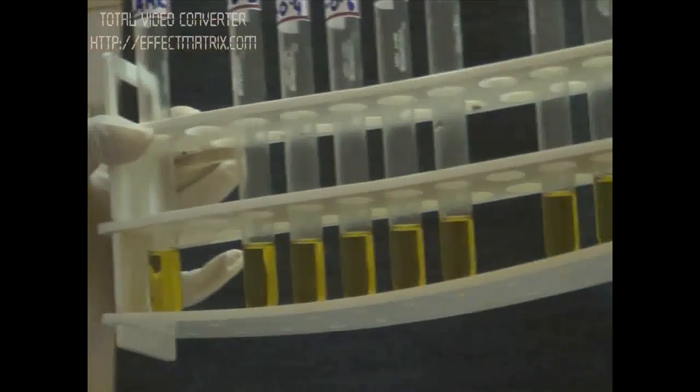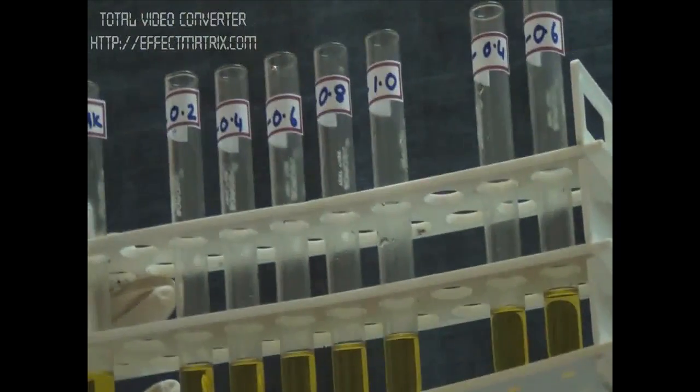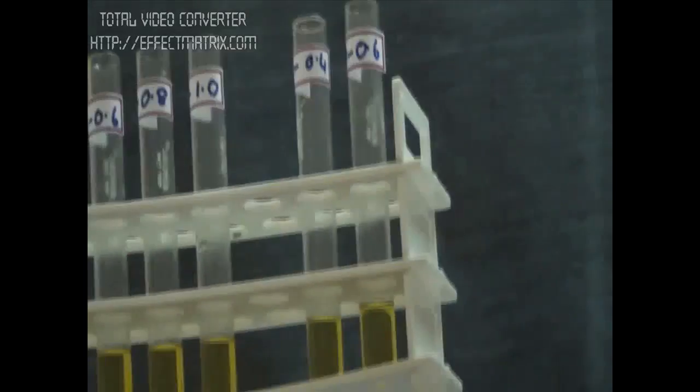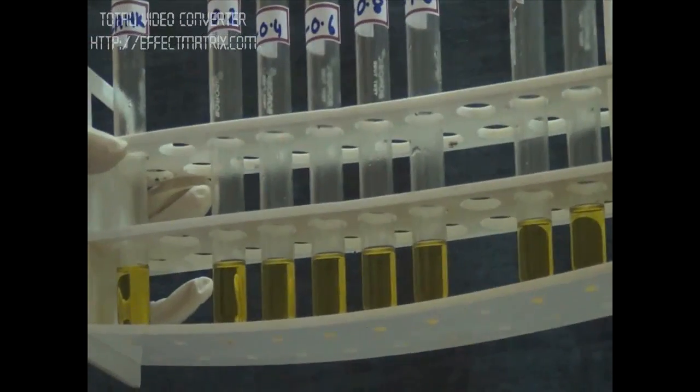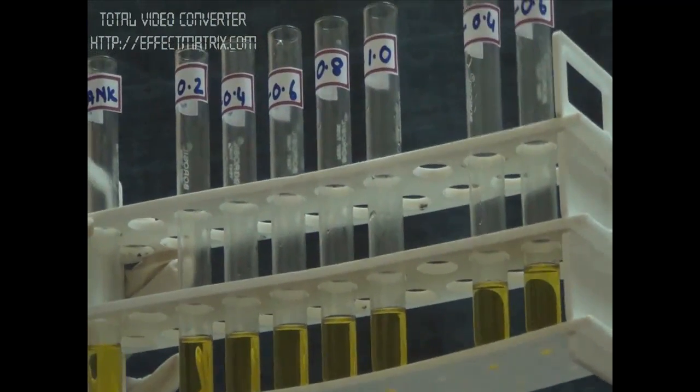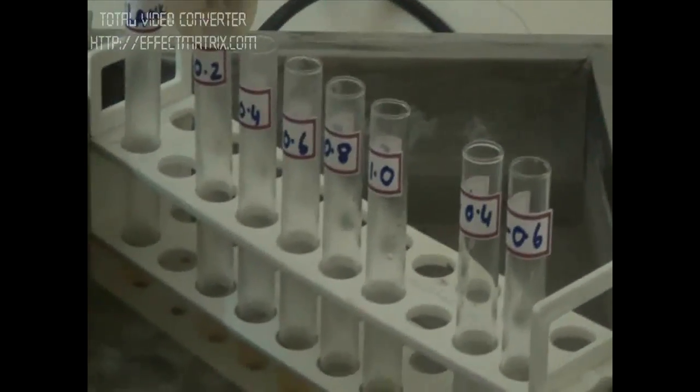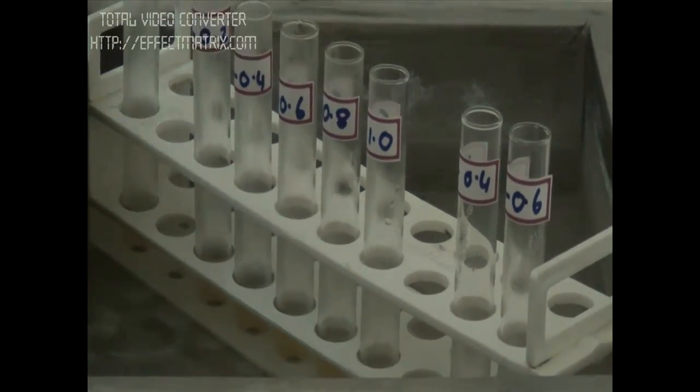We have added acid in the reagent already, so the conversion of ribose sugar to furfural has started. And now when we keep it in the boiling water bath, it will start reacting with our reagent orcinol and we will start to get the greenish color to standardize our RNA sample. Now we have to keep all the tubes in boiling water bath for 15 minutes.